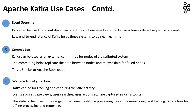Six, Kafka can be used for website activity tracking use cases. Events such as page views, user searches, user actions, etc. are captured in Kafka topics. This data is then used for a range of use cases: real-time processing, real-time monitoring, and loading to a data lake for offline processing and reporting.